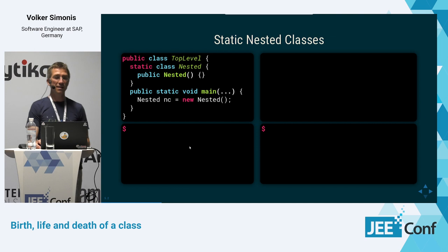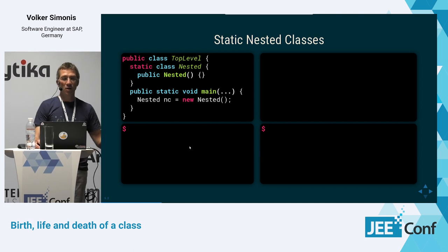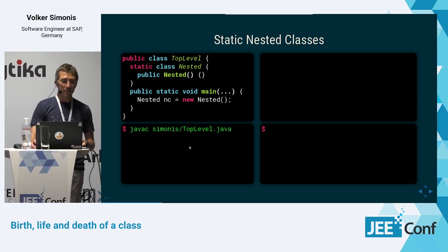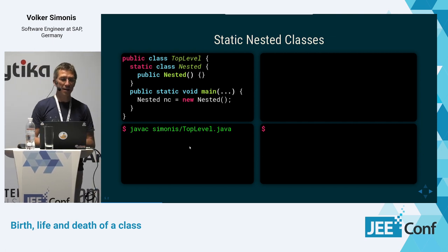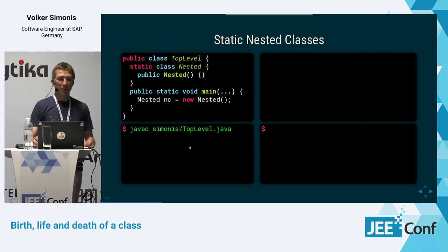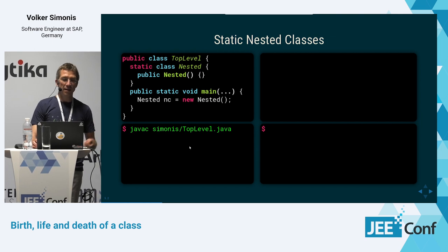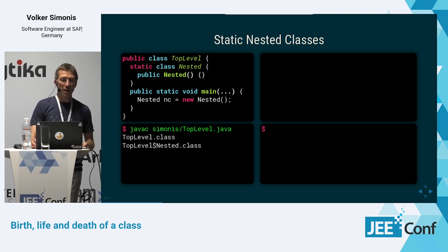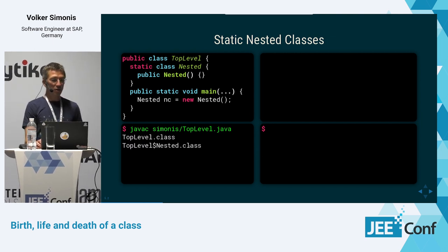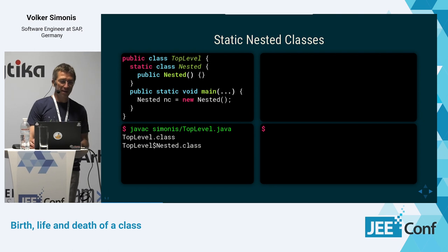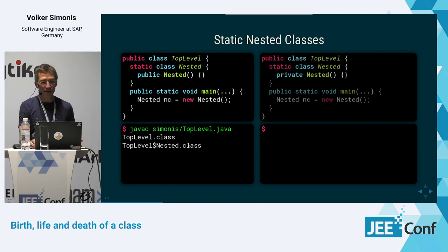Let's start with static nested classes. We have a top-level class that declares a static nested class, and a main method that instantiates it. If you compile this with javac, you'll get two class files: TopLevel.class and TopLevel$Nested.class.